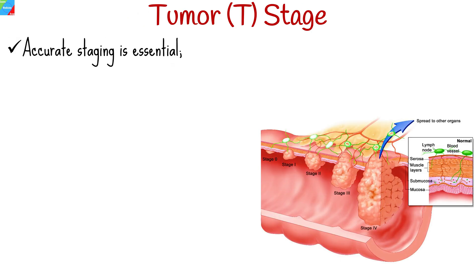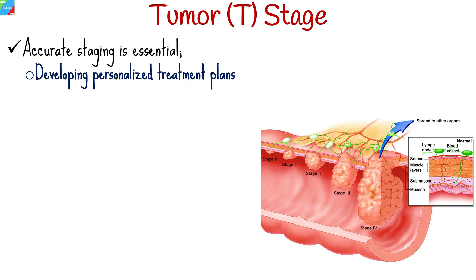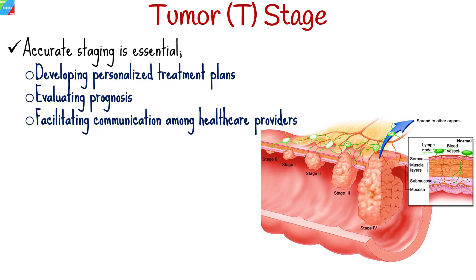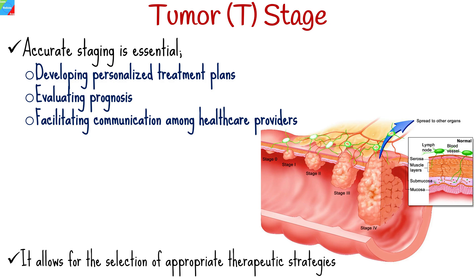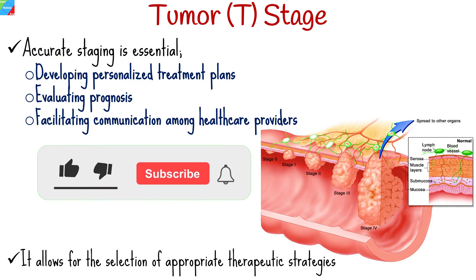Accurate staging of esophageal cancer using the AJCC system is essential for developing personalized treatment plans, evaluating prognosis, and facilitating communication among healthcare providers. It allows for the selection of appropriate therapeutic strategies, including surgery, chemotherapy, radiation therapy, targeted therapy, and immunotherapy tailored to the individual patient's needs and disease characteristics.